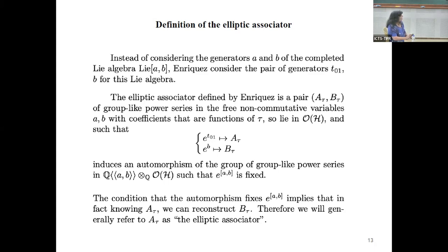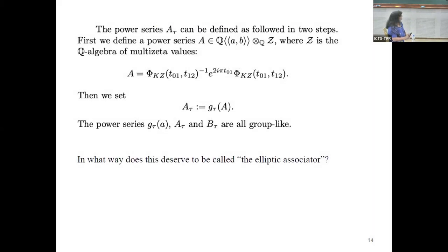Everything in GRTL sends [A,B] to zero, so the automorphism fixes e^{[A,B]}. If you know the action on the first generator, you can reconstruct the action on the second. We often just say A_tau is the elliptic associator. Here's the formula: you first define A as given by an explicit formula whose coefficients are just multiple zeta values - the usual ones. You can prove the coefficients of the series phi_KZ generate all multiple zeta values. Then you take G_tau of that: A_tau = G_tau(A).